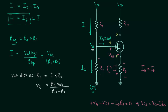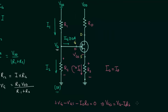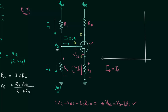This equation is the equation of a straight line. We will plot this line along with the transfer curve, and the intersection point will be the operating point — the Q point. We already know how to plot the transfer curve of an N-channel JFET using Shockley's equation, so I will quickly plot it.